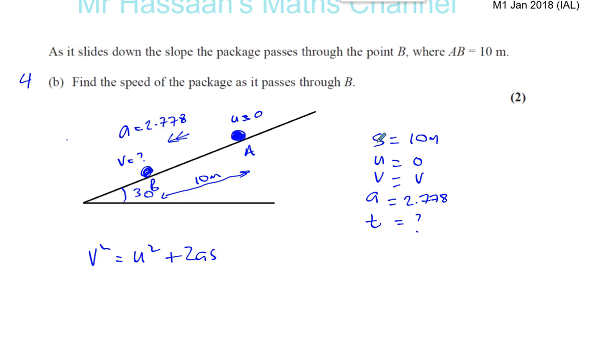You've got like v equals u plus a t, that won't work because there's no t. You've also got v squared equals u squared plus two a s, which is what we see will work because we have everything we need. We've got s equals ut plus a half a t squared.